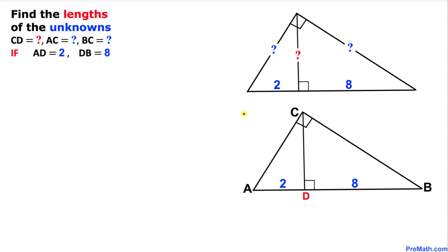Welcome to pre-math. In this video tutorial we have got this right triangle ABC and we have an altitude CD, as you can see in this figure. Moreover, this line segment AD is 2 units and this other line segment DB is 8, and we are going to calculate the values of CD, AC, and BC.